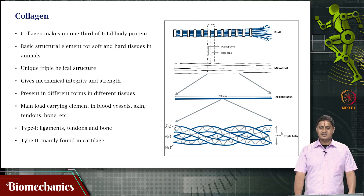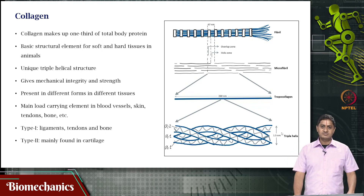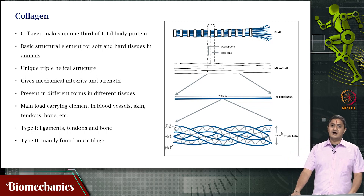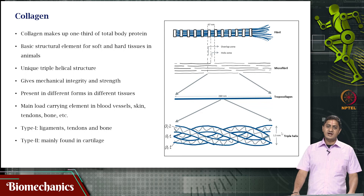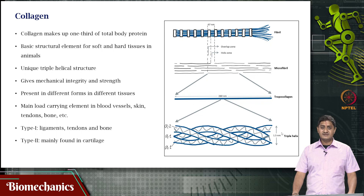Something we have not discussed in the bone lecture, but we can now mention: collagen and how it is aligned to the bone affects the strength of the bone. So it forms a structural element for both soft tissues and hard tissues, and it has a unique triple helical structure that gives it mechanical integrity and mechanical strength.